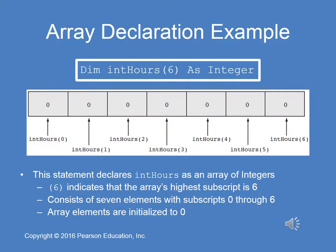Here we have a coded example of an array declaration. We're declaring an array whose name is int hours, and its highest subscript is six, which means it will hold seven integers — as integer. It will hold integer hours zero through int hours six. And as I mentioned, these seven integers are adjacent or sequential in the computer's memory.